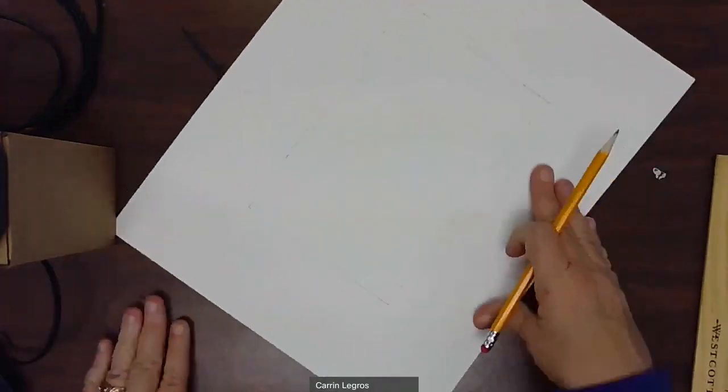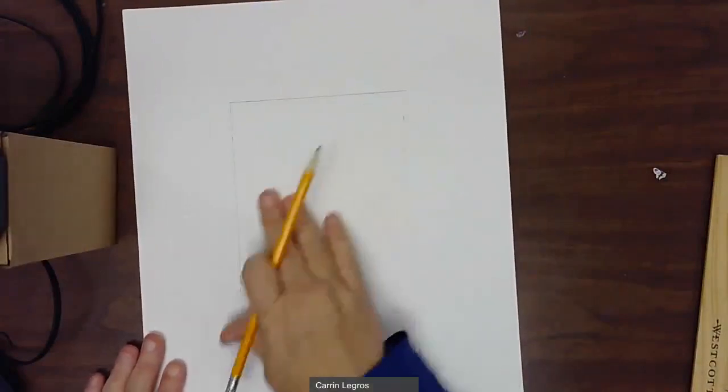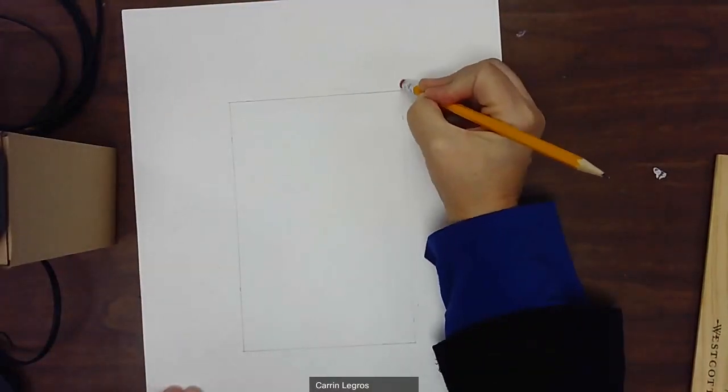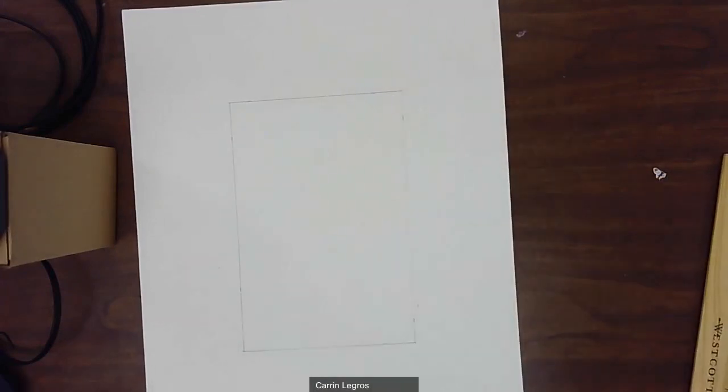And now we have our border. So our border is the part out here and we have an interior rectangle. I've gone over a little. I can just take my pencil and erase. And that's all for step two.